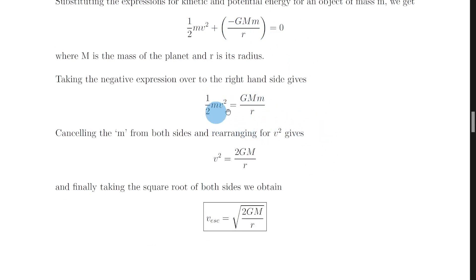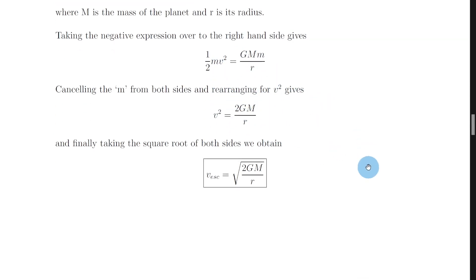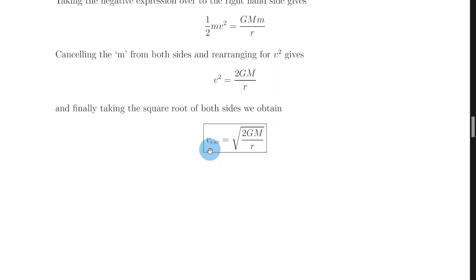You then want to cancel out the m's and multiply by two on both sides to get v squared equals 2GM over r before finally square rooting the term to get v escape. So we end up with v escape is equal to the square root of 2GM over r.